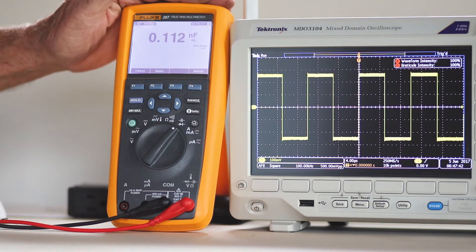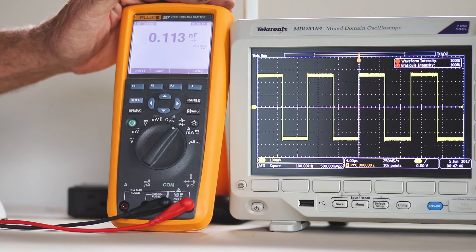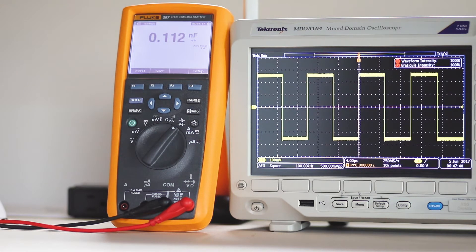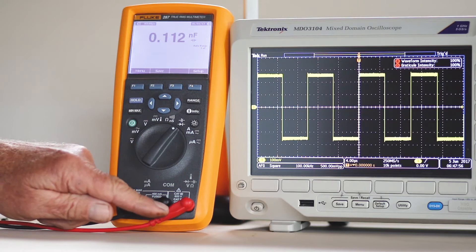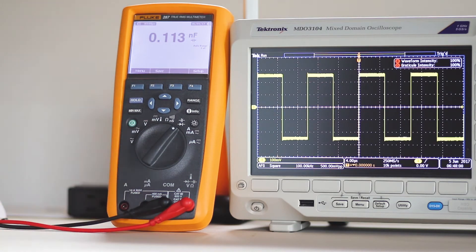This is a Fluke 287 True RMS Multimeter, a very high-quality instrument. To do a capacitor measurement, plug the black probe into the common port, and the red probe into the combination diode capacitance port. With the instrument turned on,